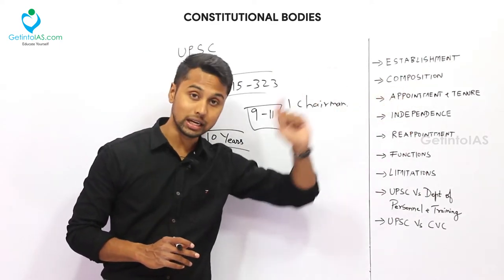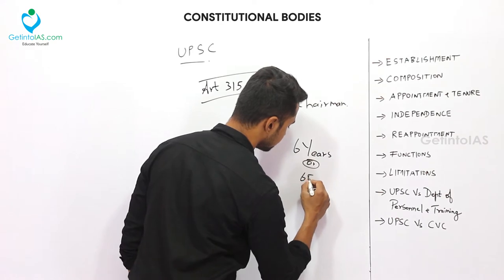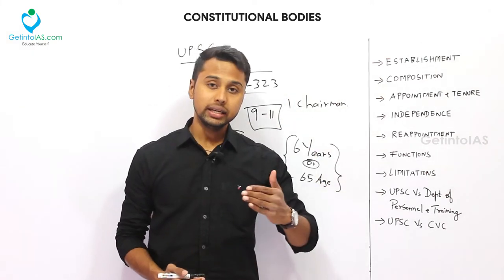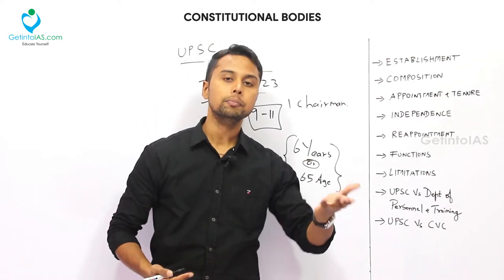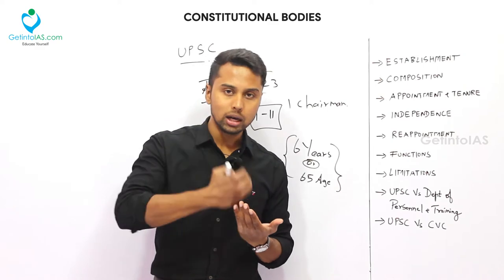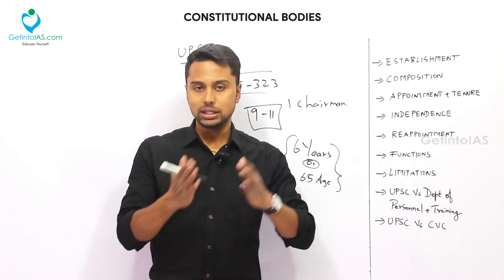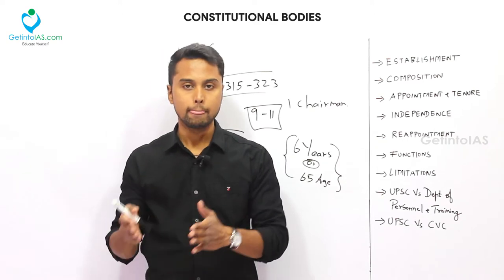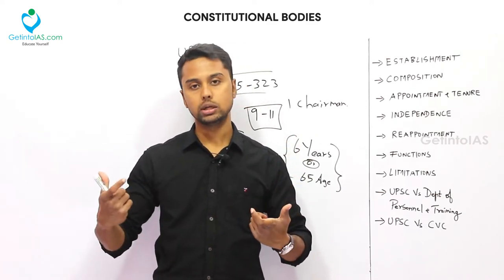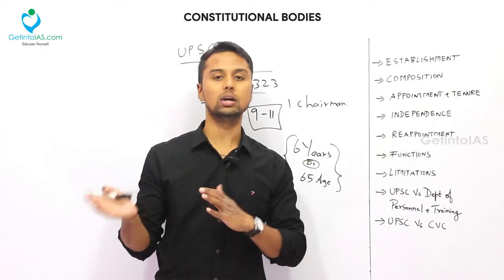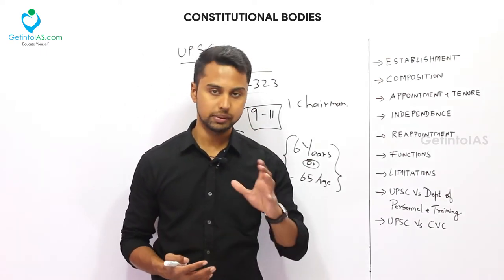About the tenure: it is 6 years or until they attain the age of 65, whichever is earlier. The condition of service is determined by the President — same as with the Election Commission. I am comparing constitutional bodies so you don't mix things up. The salary, allowances, and removal of the Election Commissioner is equal to a Supreme Court judge. Similarly, the condition of service of the UPSC Chairman and members is determined by the President.